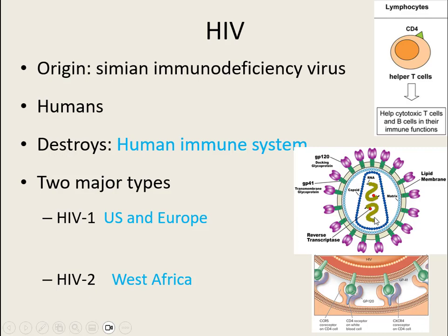HIV has two identical copies of its RNA and the reverse transcriptase enzyme. It is enveloped, and on the outside it has two glycoproteins: GP120 and GP41. These two glycoproteins allow HIV to recognize T-helper cells, attach to them, invade them, and ultimately destroy them.